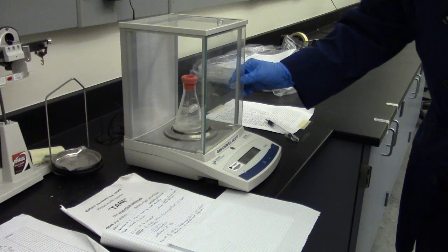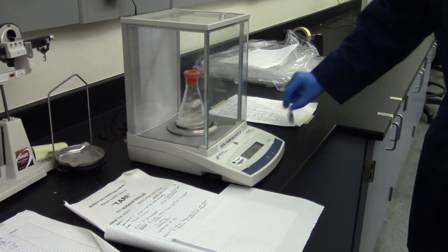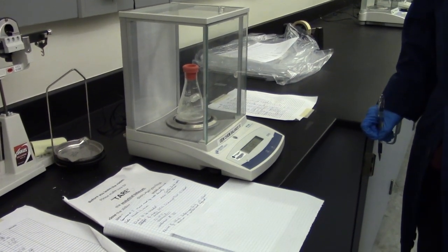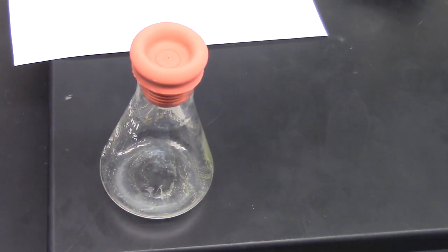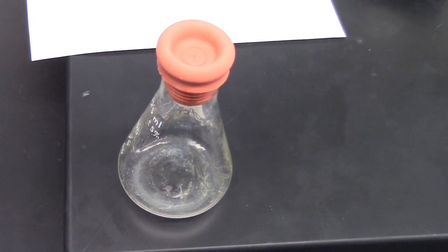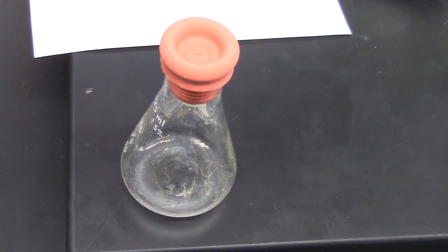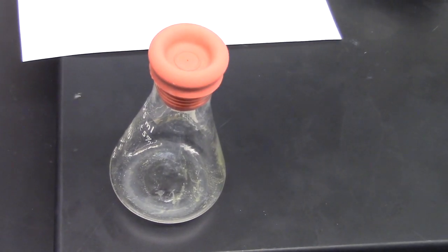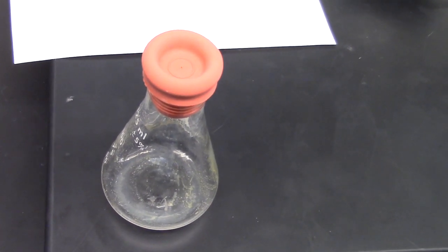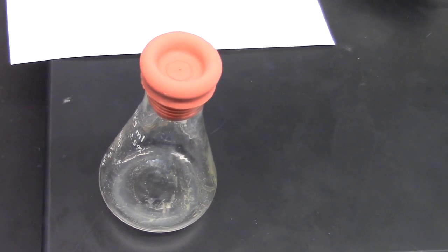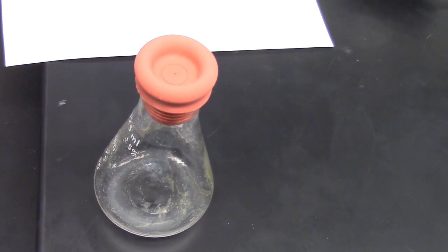You will return to the balance room to re-weigh the flask, septum, and condensed liquid. The condensed liquid occupies a much smaller volume than that of the flask, so the weight of the air is essentially the same as that in the first weighing. Therefore, the mass of the condensed liquid is found by the difference between the mass of the empty flask and the septum and the mass of the flask, septum, and condensed liquid.